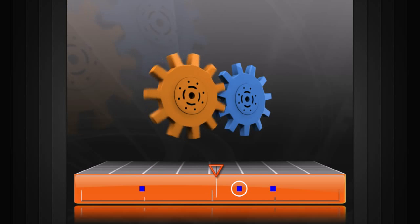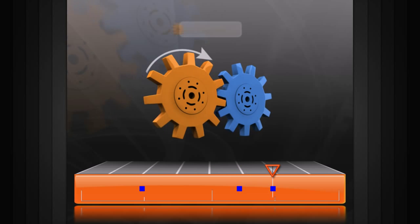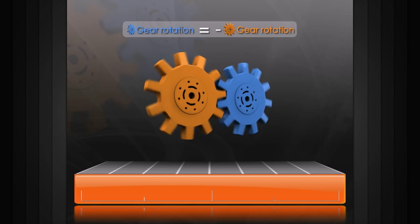Instead, we can write an expression that reads the rotation values of the orange gear, reverses it, and puts that new value into the blue gear's rotation. Now, when we rotate the orange gear, the blue gear animates correctly.